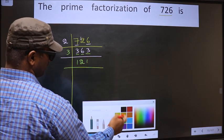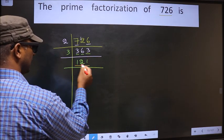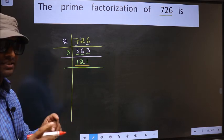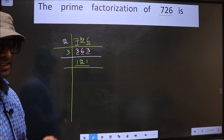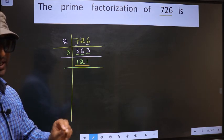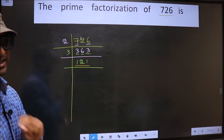Now here we have 121. Always remember, 11 squared is 121. I repeat: 11 squared is 121. 11 into 11 is 121.